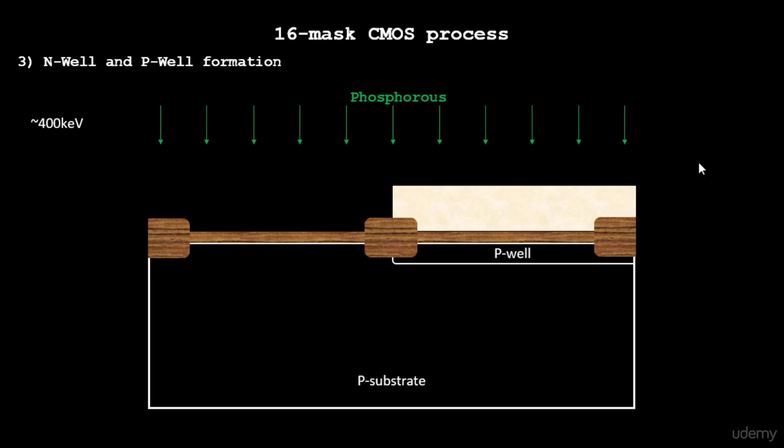We use the same ion implantation process to implant phosphorus so it penetrates through the oxide layer and creates an N-well here. The ion implantation energy for implanting the phosphorus atoms is a bit high because phosphorus atoms are heavier than boron atoms.